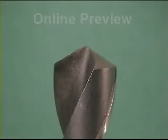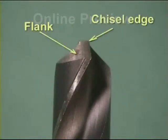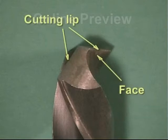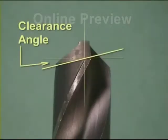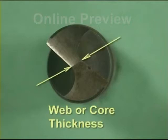At the business end, we have the point. This has to be ground to a specific angle, and requires the lips to be of equal length. Each side of the point has a flank, and at the very end there is the chisel edge. The cutting edge, or lip, has a face and a clearance angle. Where the flutes have been machined into the diameter of the drill, they leave a portion between them known as the web, or core thickness. This increases in thickness towards the shank end of the drill.